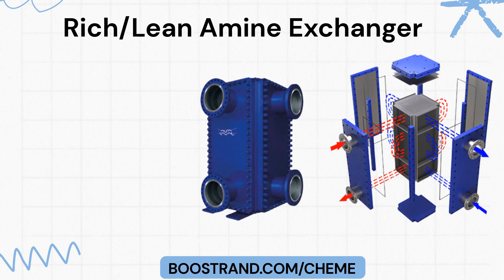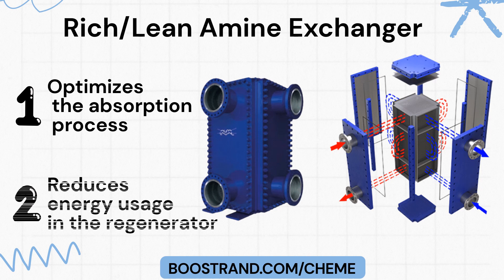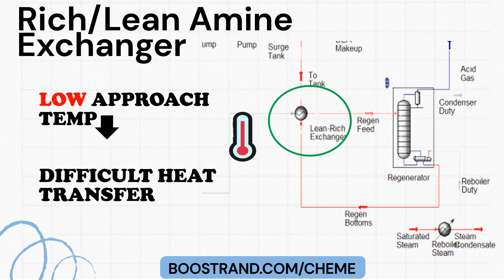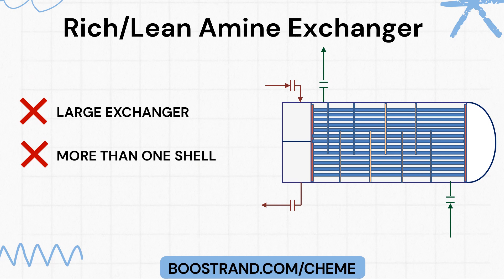The close temperature approach in a rich/lean amine heat exchanger allows the lean amine to be preheated to near the temperature of the rich amine exiting the absorber. This does two things: it optimizes the absorption process by ensuring the lean amine is sufficiently cool to efficiently absorb acid gases, and it reduces energy usage in the regenerator by minimizing additional heating needed to reach regeneration temperature. The close temperature approach is a key factor in overall energy efficiency, but commonly leads to a large exchanger or more than one shell-and-tube exchanger in series.